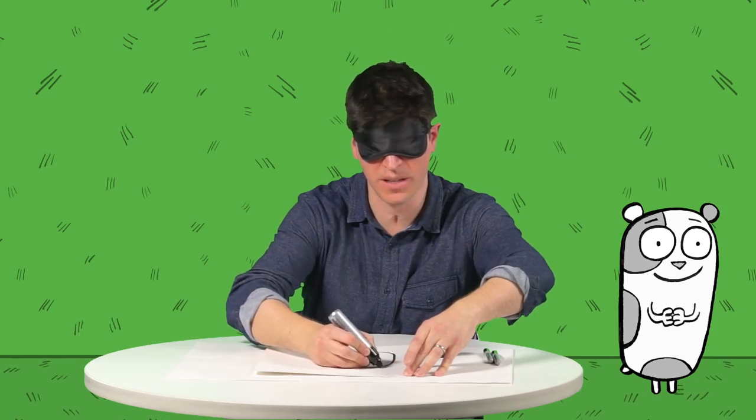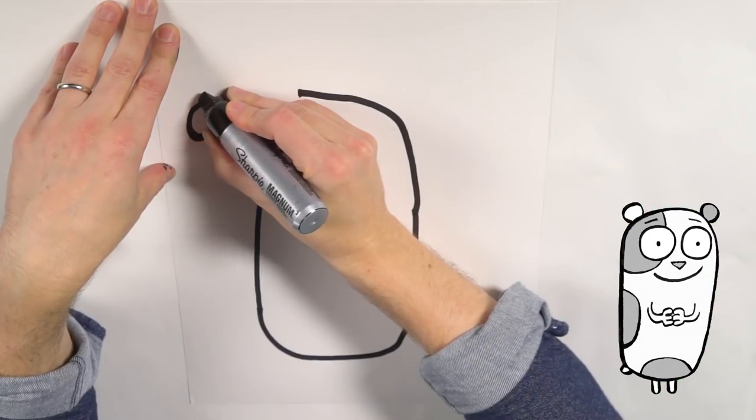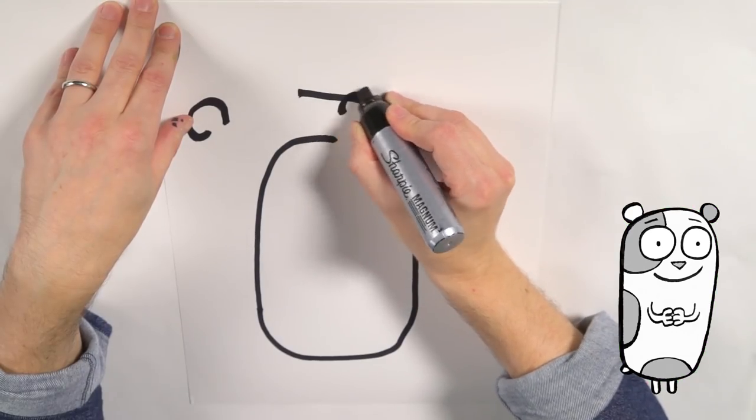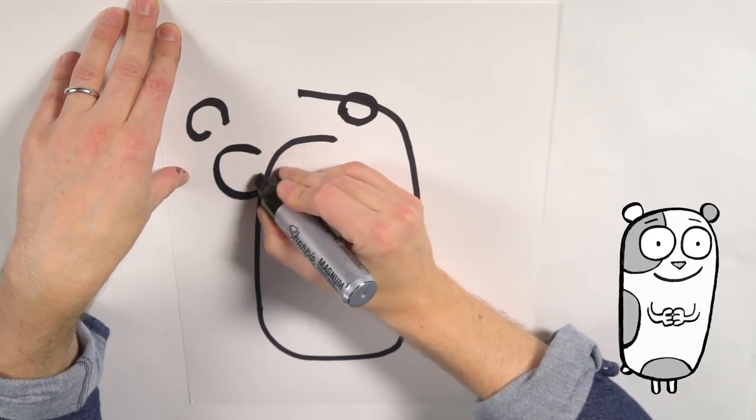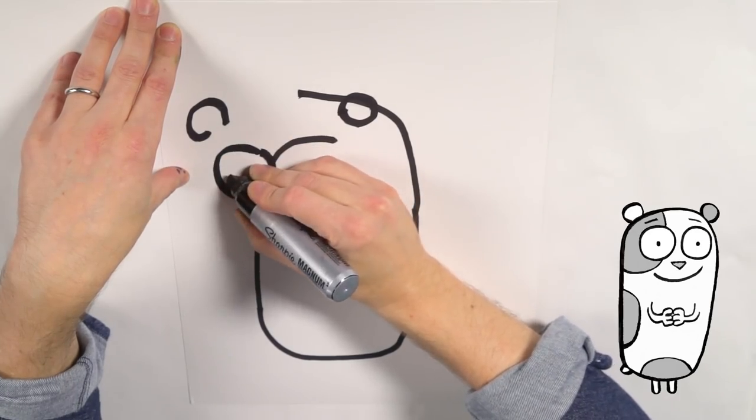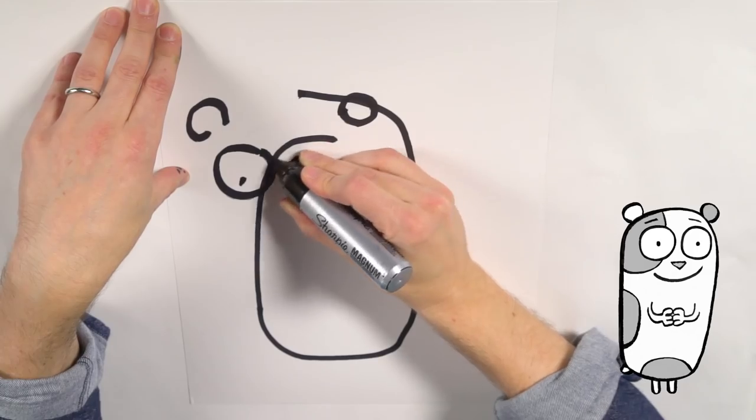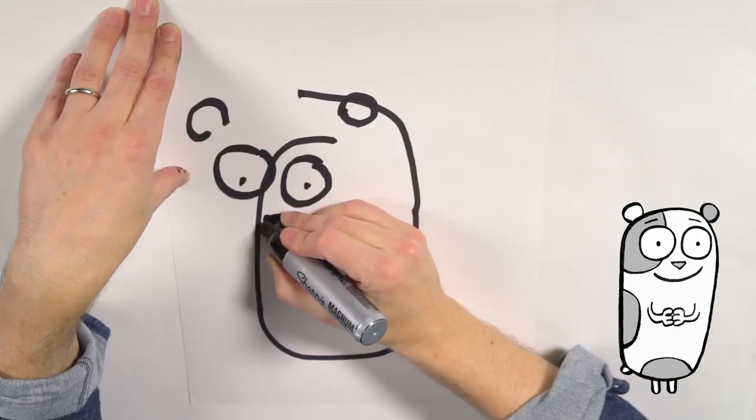Then I draw one ear on the left here and then I'll go back over here to draw the other ear which is like a circle. And now I'm going to add in the eyes which are just circles.